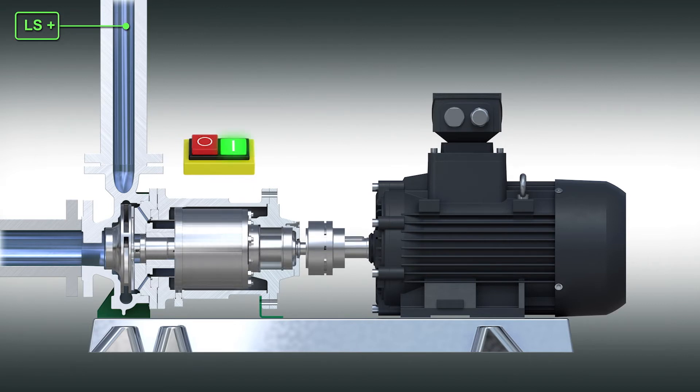When the pump then starts, the liquid to be pumped passes through the suction nozzle into the pumping chamber and is accelerated by the impeller and pumped through the pressure nozzle into the piping.